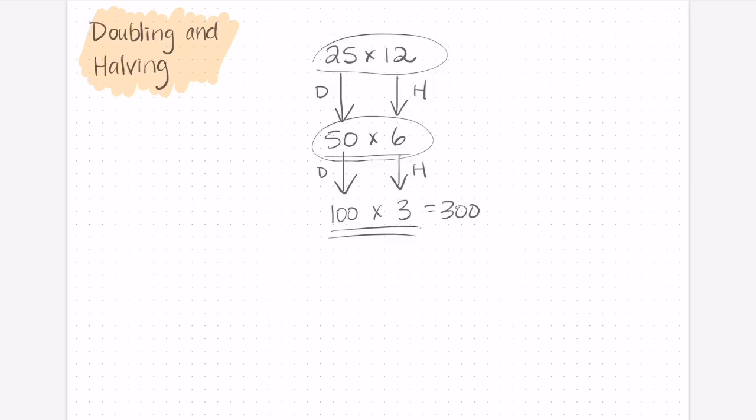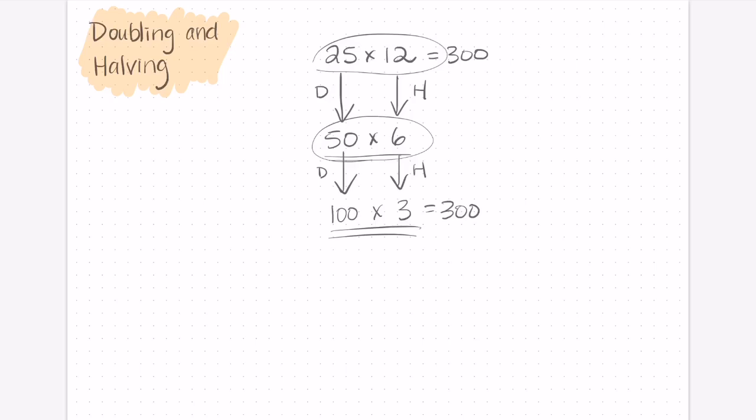So we know that the product of our original expression, 25 times 12, is 300. Now it's important to know why strategies work. So let's take a look at exactly why the halving and doubling strategy works.